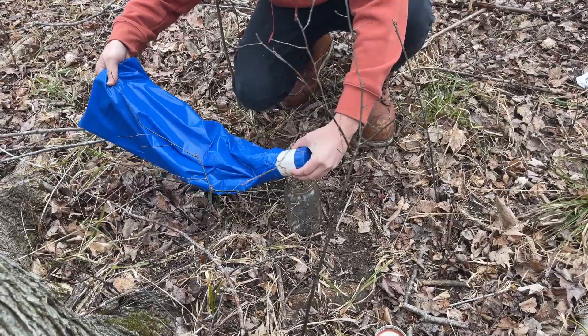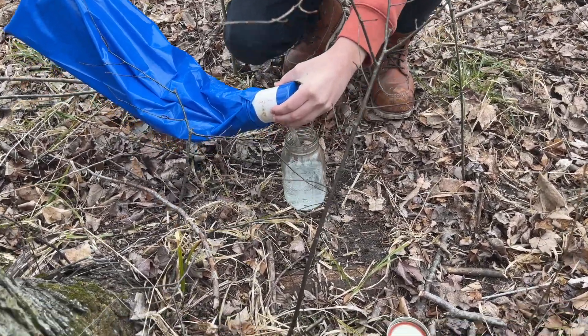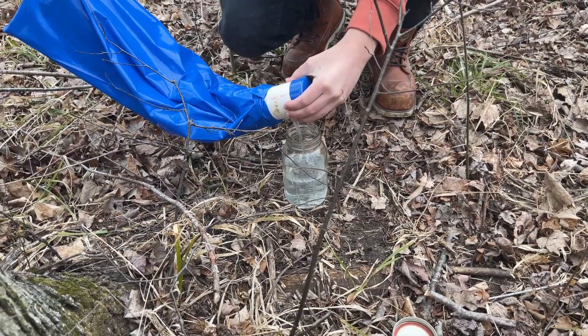Maple tree sap contains 1-2% sugar content which is kind of low but it works fine for propagating mushroom mycelium.